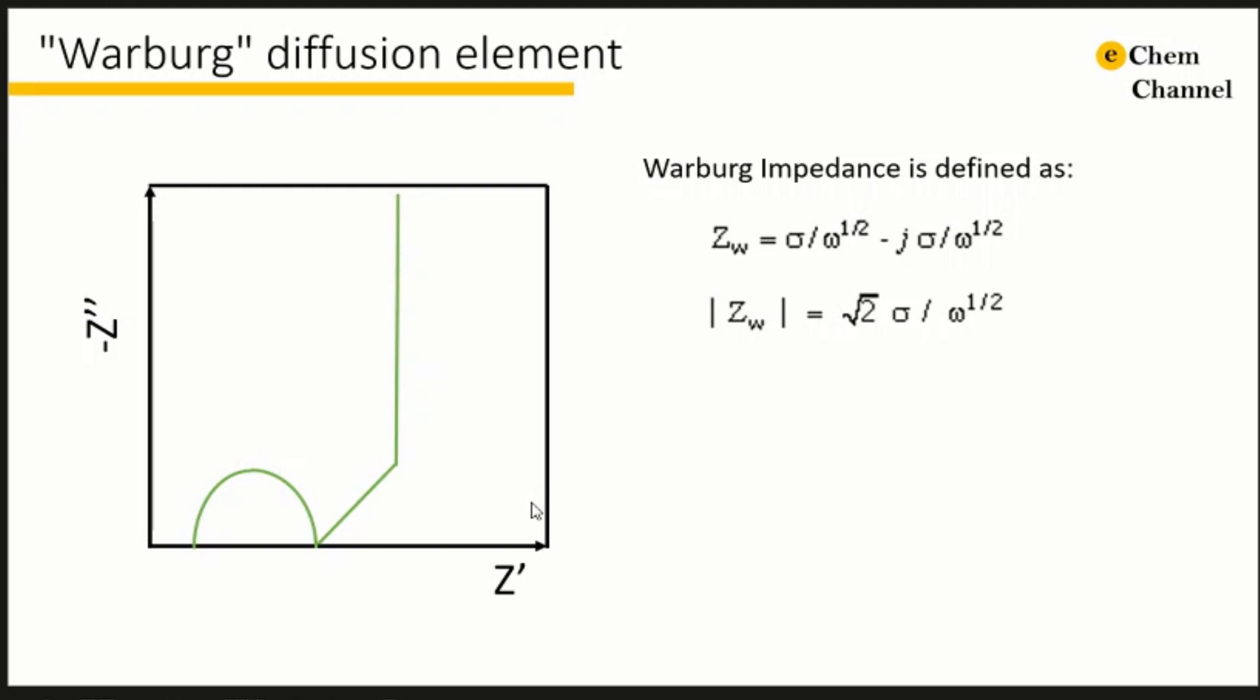This is the simplest diffusion situation because it is only the linear distance from electrode that matters. The Warburg impedance is an example of a constant phase element for which the phase angle is a constant 45 degrees and independent of frequency.